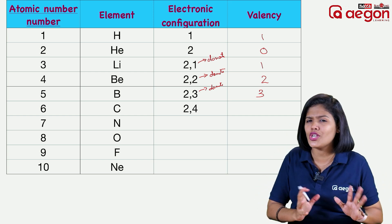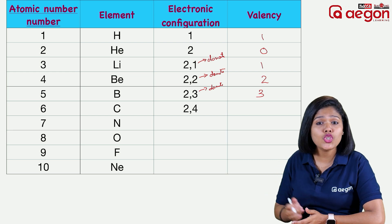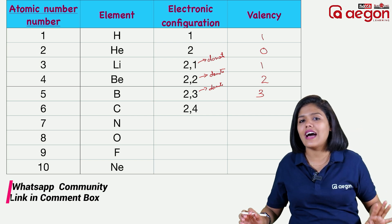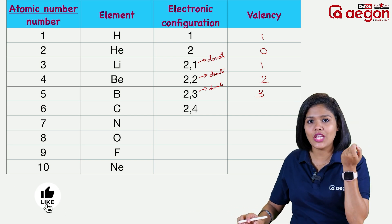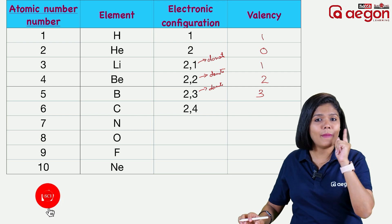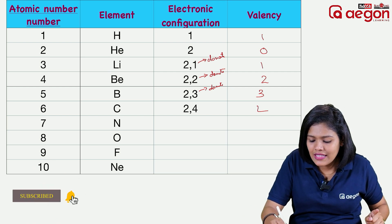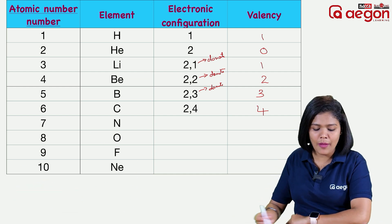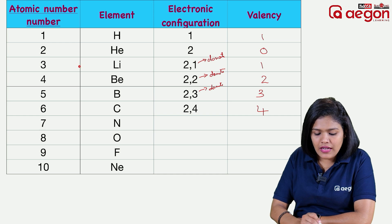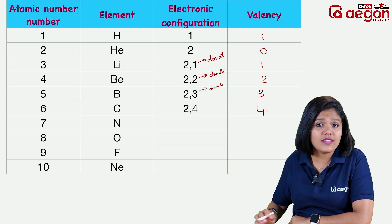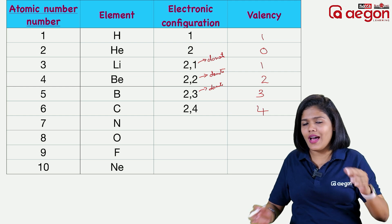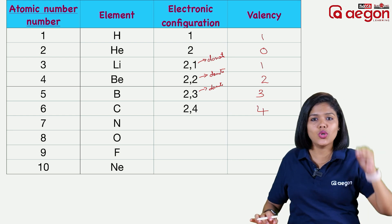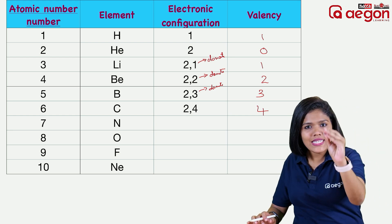Carbon has atomic number 6. The electronic configuration is 2, 4. What do we do here? Carbon has 4 electrons in the outer shell. Carbon shares these 4 electrons, so the valency of carbon is 4.